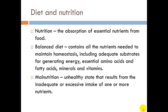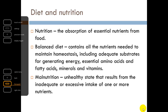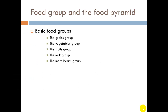Malnutrition: an unhealthy state that results from the inadequate or excessive intake of one or more nutrients. You can't just eat a constant amount of protein — you're going to need other things: fruits, vegetables, fiber to move the stuff through your system and get adequate nutrients out of it.